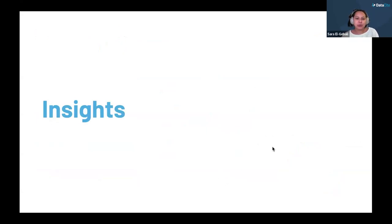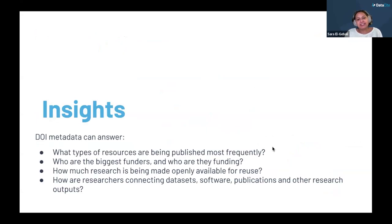In the next section, we will explore the types of questions you can answer using the DOI metadata registered in Datasite. By analyzing that metadata, we can get insights into patterns, trends, and metrics, providing a deeper understanding of the research landscape. For example, the DOI metadata can help answer: what types of resources are being published most frequently? Who are the biggest funders and who are they funding? And how much research is being made openly available for reuse?